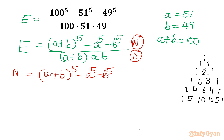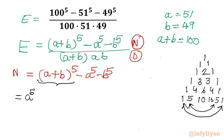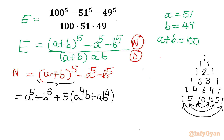Now let's expand A plus B whole power 5. We can club terms with the same coefficients. So I will write at the beginning A power 5 plus B power 5 — first and last. Then with coefficient 5 in bracket: A power 4 B plus A B power 4. Now for coefficient 10 I will write: 10 times A cube B square plus A square B cube.